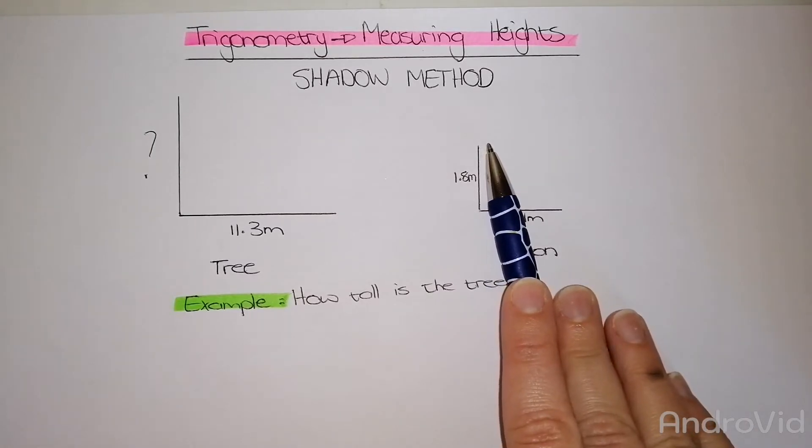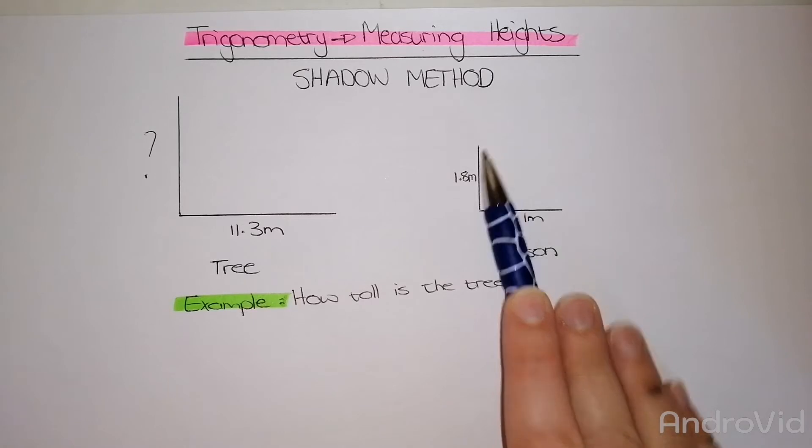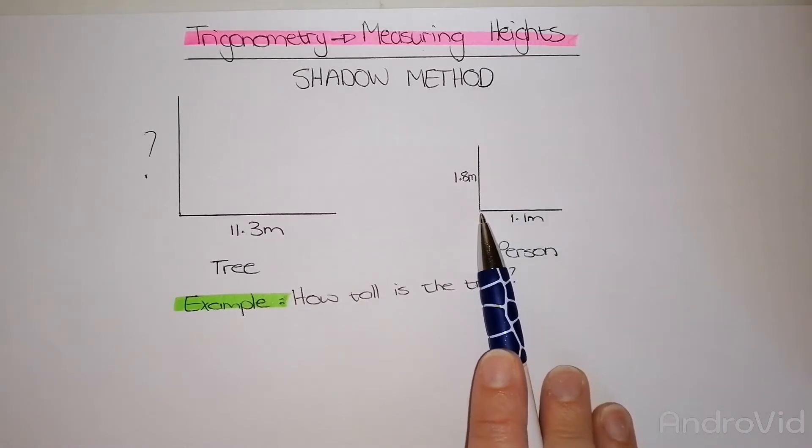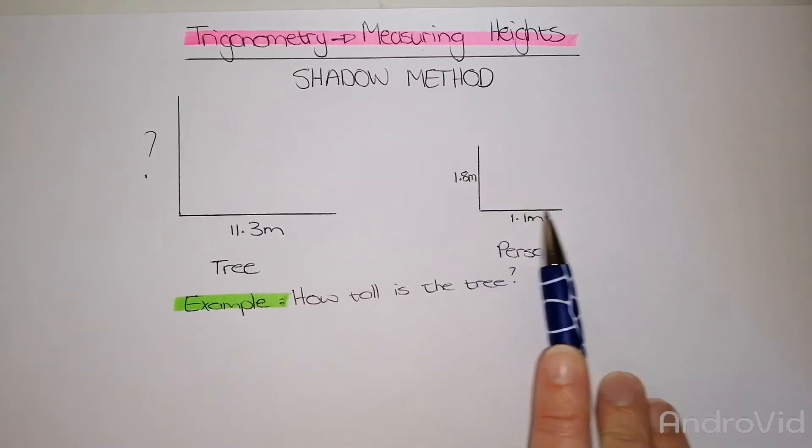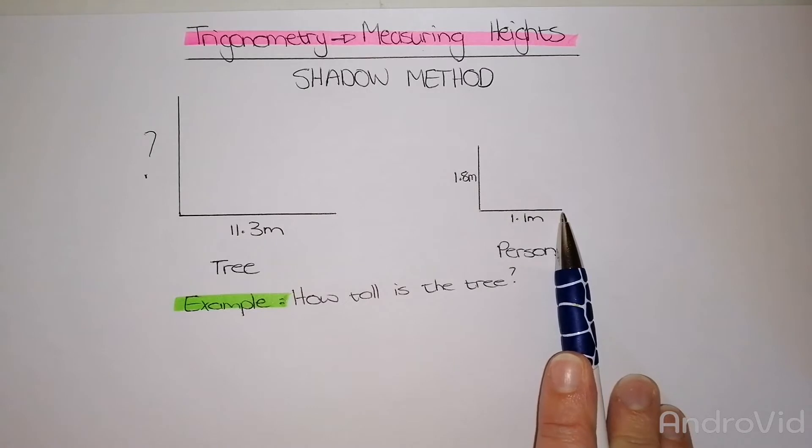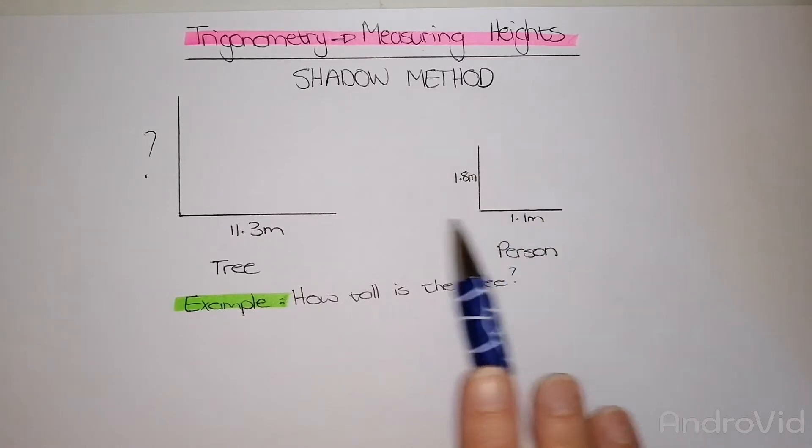Measure the person or myself from the ground right up to the highest part. If I'm wearing a ponytail, to the highest top part of my ponytail, and then also the shadow from my feet or whoever's feet right up to the furthest point of the shadow. These three measurements have to be quite accurate for you to find what the actual height is.